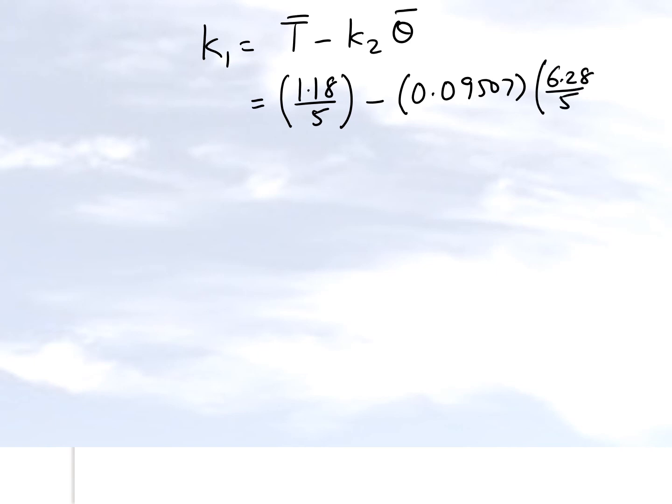And theta bar will be the average value of the theta values which is 6.28 divided by 5. So once we calculate this value we get 0.1166.